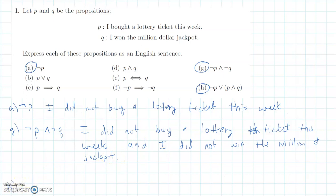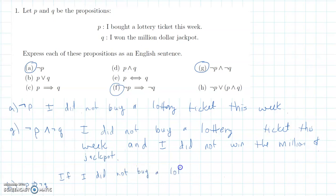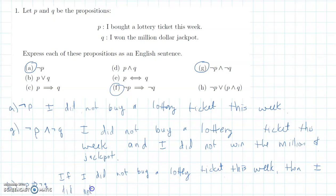Instead of H, I'll do problem F to show an example of an implication. F is NOT P implies NOT Q. In English: 'If I did not buy a lottery ticket this week, then I did not win the million dollar jackpot.'